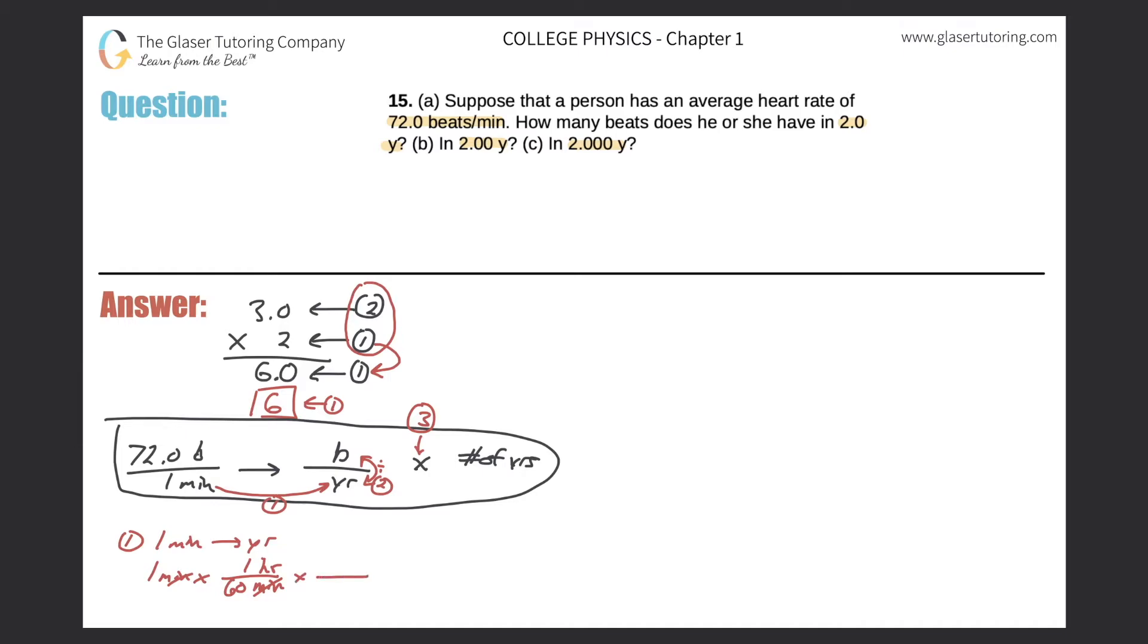That might help me get to years. There's 60 minutes in an hour, so the minutes cancel. Now I got to get rid of the hours, so the hours go on the bottom. I still don't know how many hours there are in a year, so I guess I got to go to days. We do know how many hours there are in a day: 24.